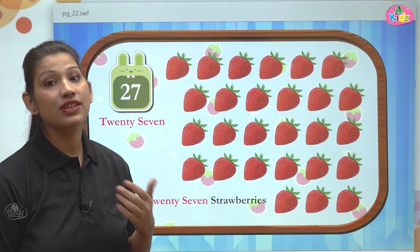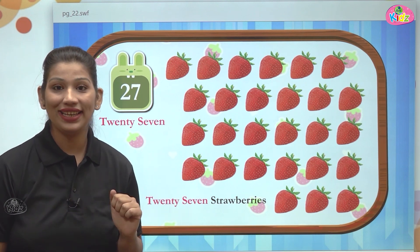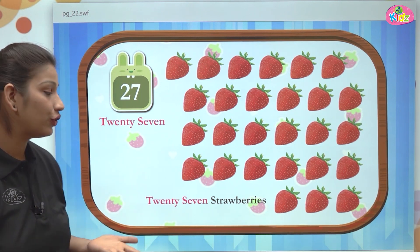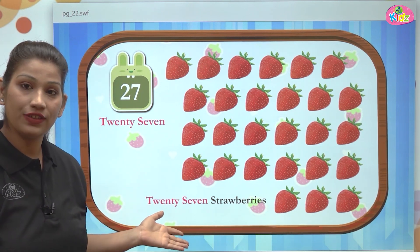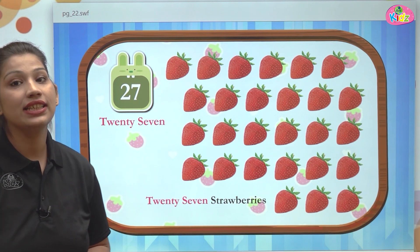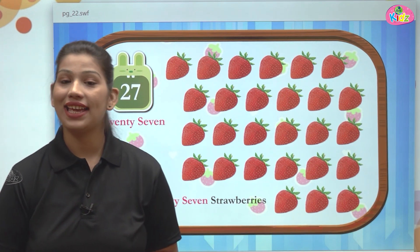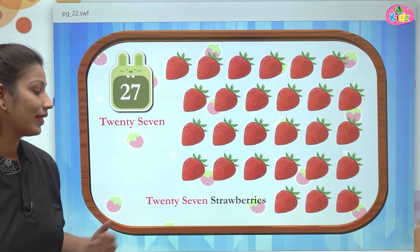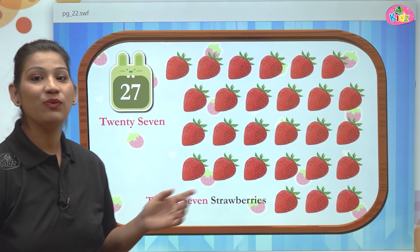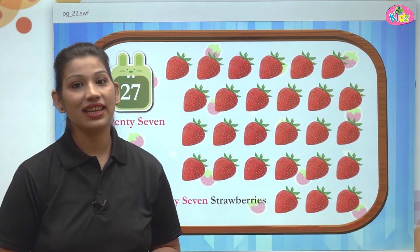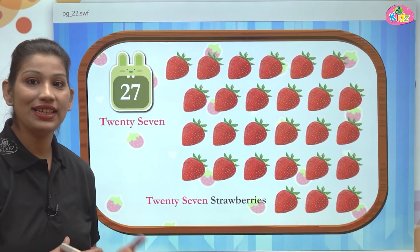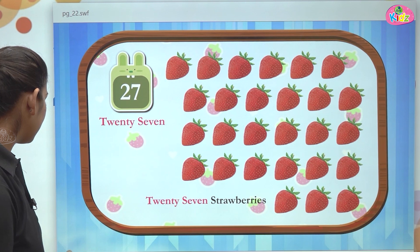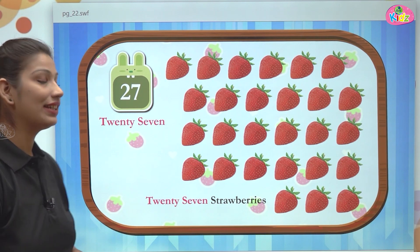27 is also very easy to write. You just have to write 20 first and then 7. T-W-E-N-T-Y is 20, and S-E-V-E-N is 7. Twenty and 7 — this is the number 27.